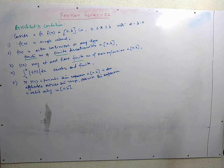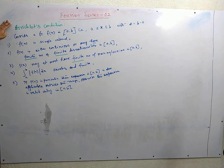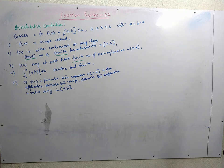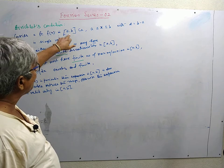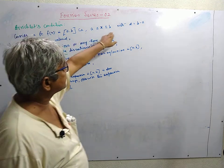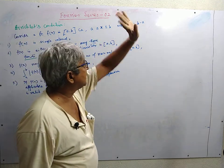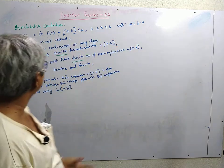In this second lecture on Fourier series, today we shall discuss the Dirichlet condition first, then go to the statement of Fourier theorem. Consider a function f of x which is defined in the closed interval a to b, where delta is equal to b minus a.